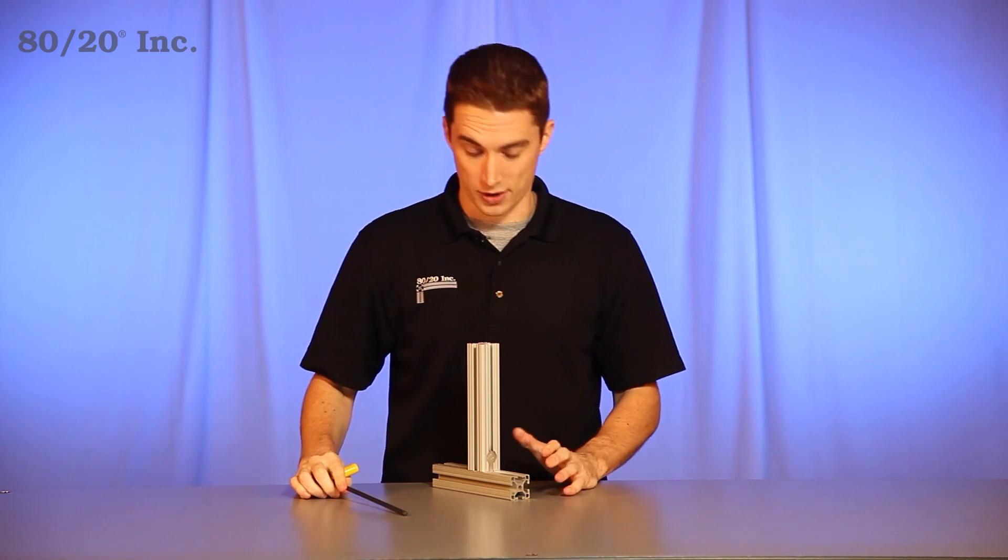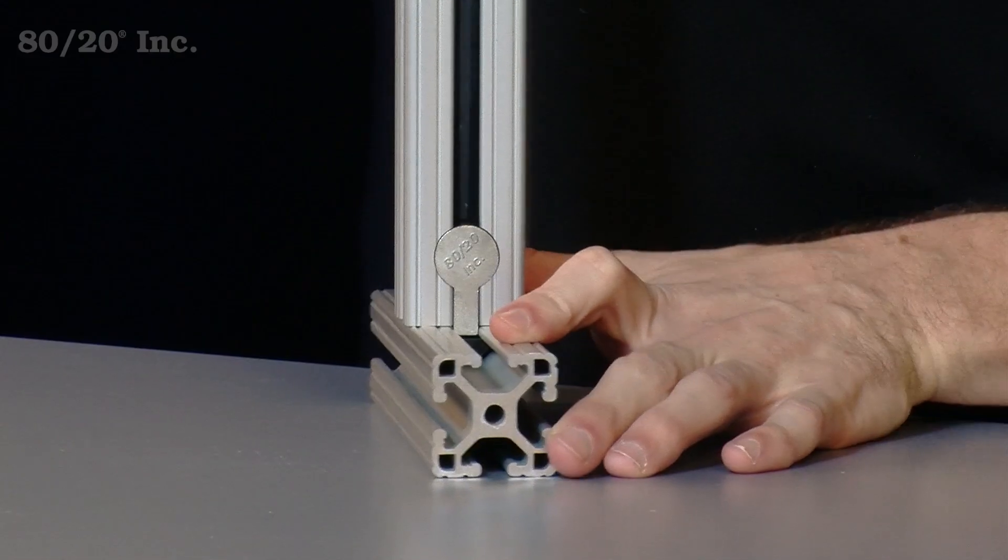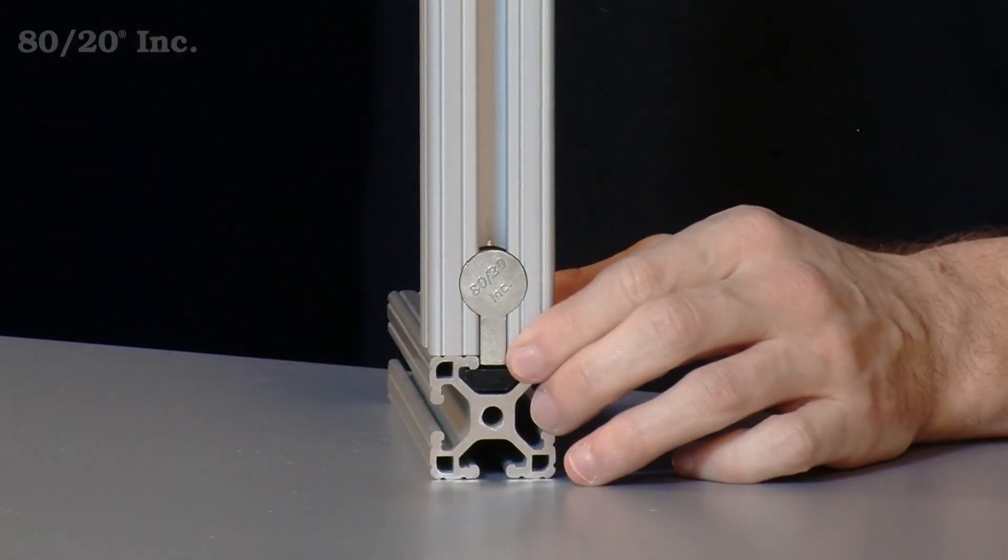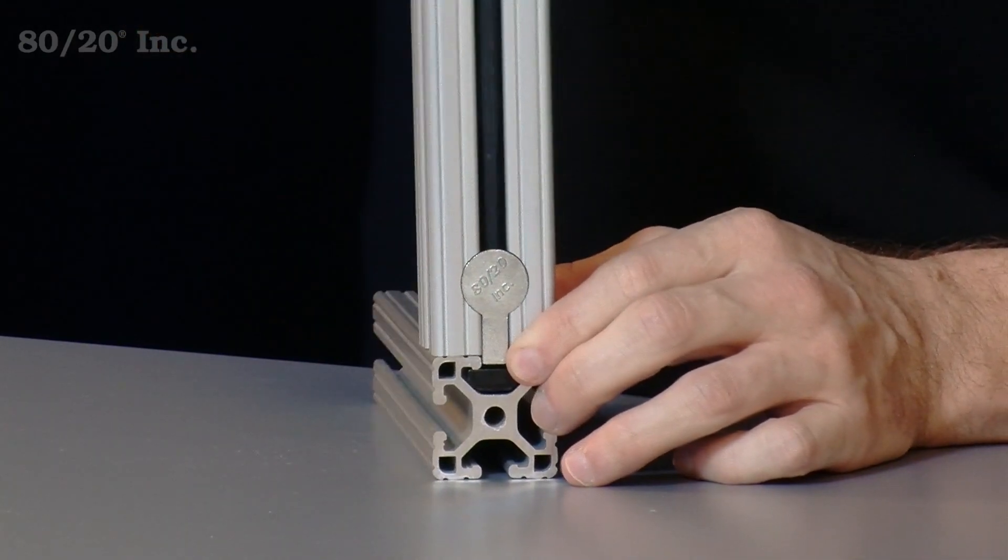The great thing about the anchor fastener is you can loosen it up and adjust it to any position on the bar that you need. Simply loosen it up and tighten it back down with your T-wrench.